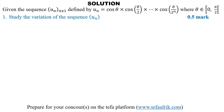Now, if a sequence UN is increasing, it means that UN+1 minus UN will always be positive or 0. That is for increasing. But if it is strictly increasing, then the difference UN+1 minus UN is strictly greater than 0. The reverse goes for decreasing.